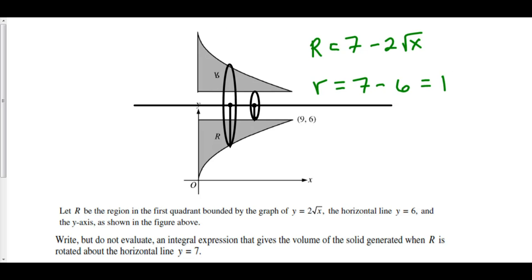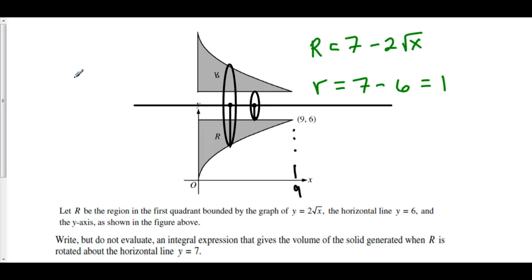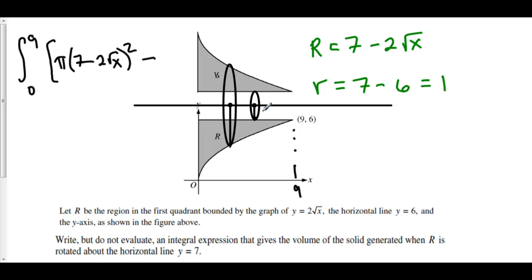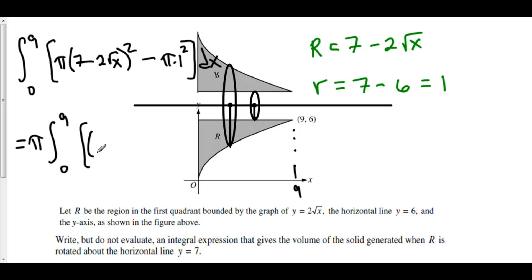We can now create the integral that defines the volume of this solid. We take the integral from x equals 0 to x equals 9 — as given — of pi times big R squared minus pi times little r squared, which is pi times the integral from 0 to 9 of (7 minus 2 root x) squared minus 1 squared, dx.